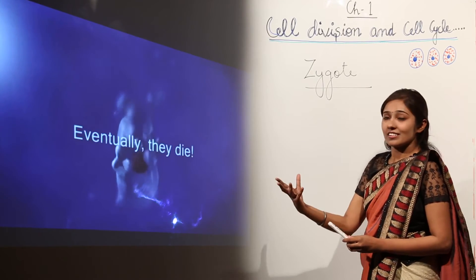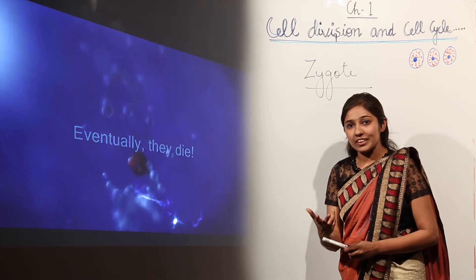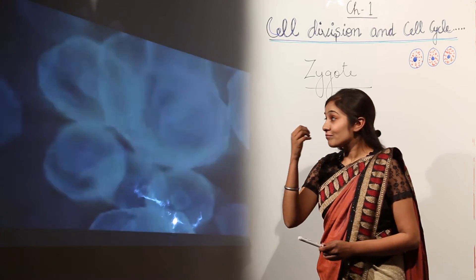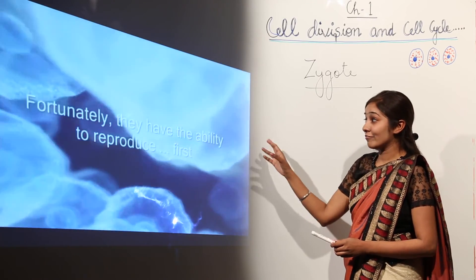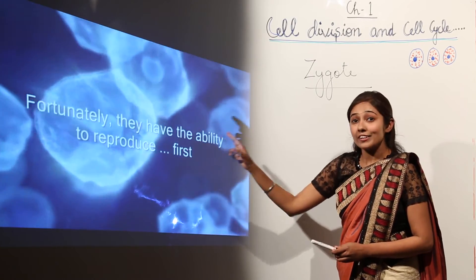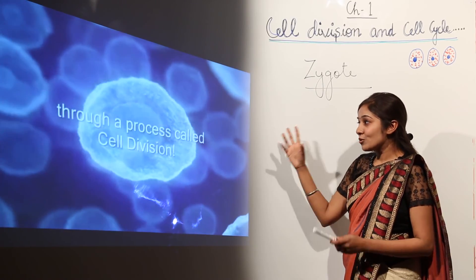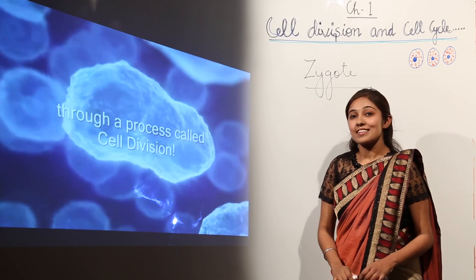But what happens before dying? There is some special process that helps them to survive. They have the ability to reproduce first. So this is how cells reproduce - by a process known as cell division.